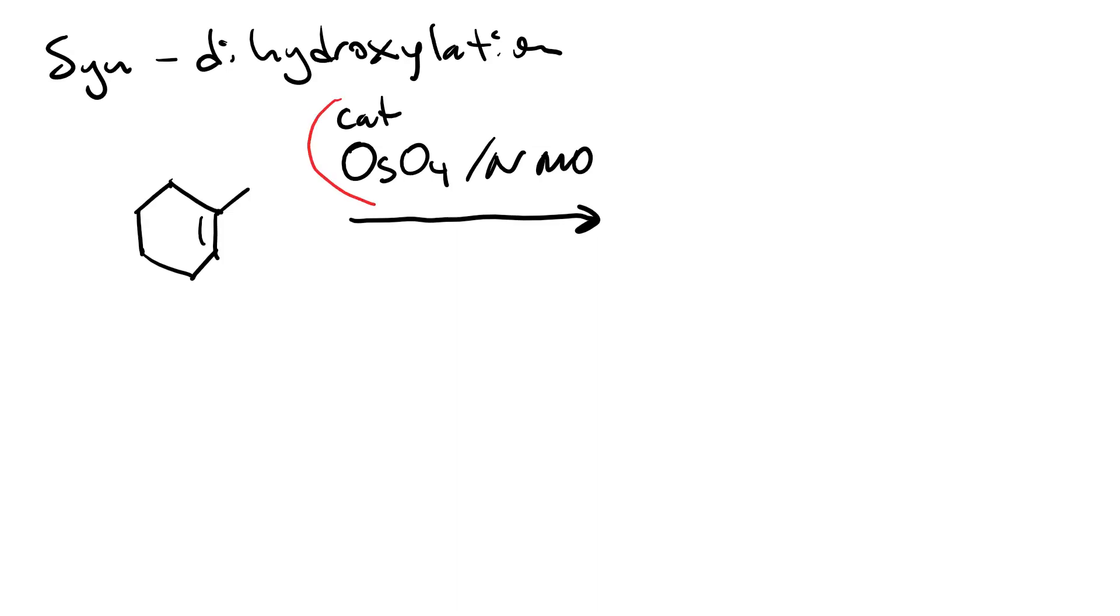If you use a catalytic amount of osmium tetroxide, regenerated by NMO, you get syn-dihydroxylation. That's syn-addition of hydroxyl groups at both of your sp2 hybridized carbons. So you get the syn products, where both of the hydroxyl groups added are on wedges, or the enantiomer, where both of the added hydroxyl groups are on dashes. For the NMO, you could also substitute t-butyl hydroperoxide.